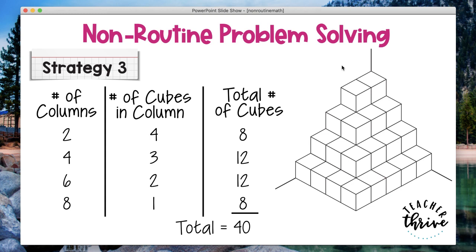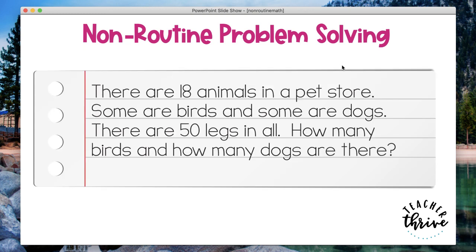I'm just going to run through a few more examples of non-routine problems — not going through solving them, just to give you an idea of what they look like and how widely varying they can be. Here's one: there are 18 animals in a pet store. Some are birds and some are dogs. There are 50 legs in all. How many birds and how many dogs are there? You can see how students could approach this in several different ways.